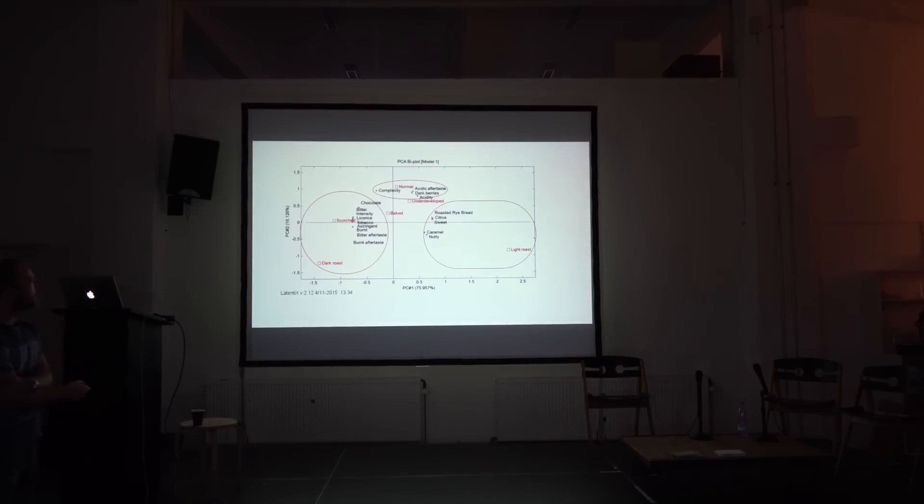When you look at something called a PCA plot, you can see how the different descriptors groups according to the different samples. Here you can see that the scorched and the dark roast, they cluster with bitter intensity, licorice, tobacco, bitter, sweet, aftertaste burned. And then you can see the light roast has got this nutty caramel citric and sweet. But the most interesting thing here is that the normal is actually very close to the complexity. I would say complexity is a positive thing. It looks like acidity, dark berries, and complexity is close to the normal roast profile.